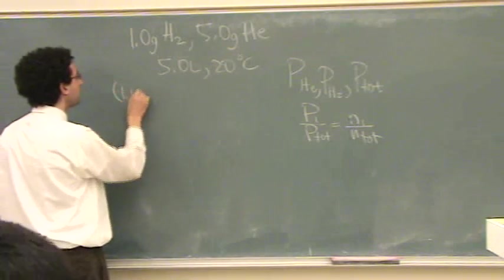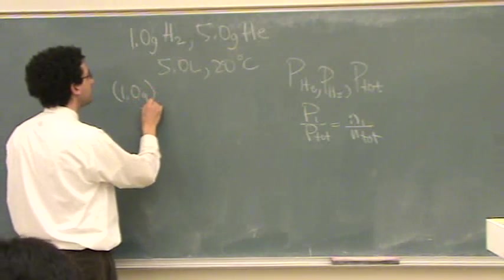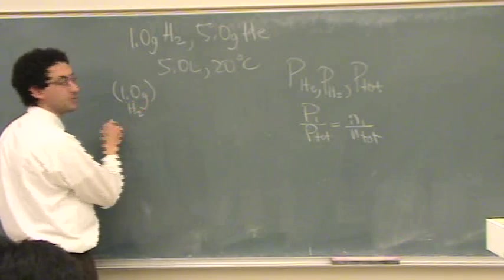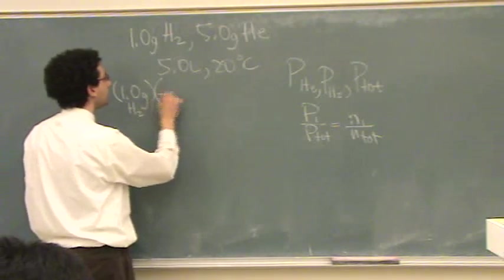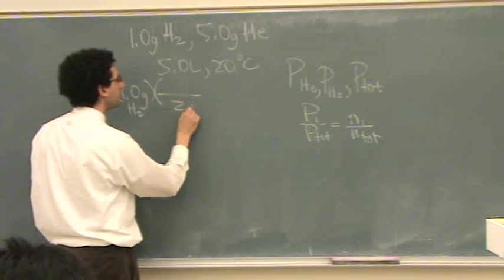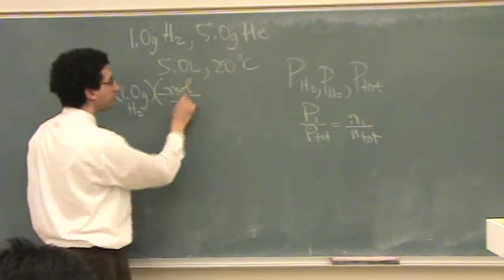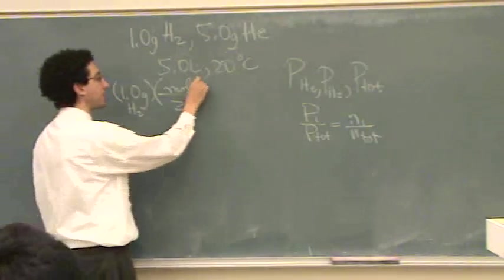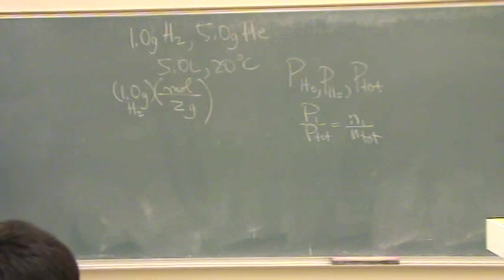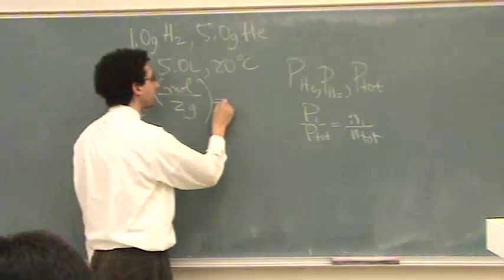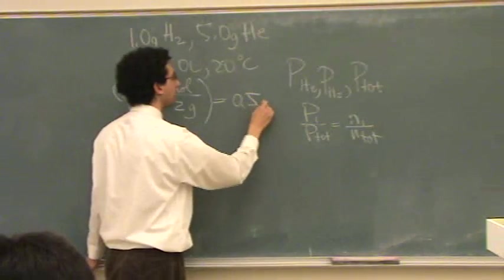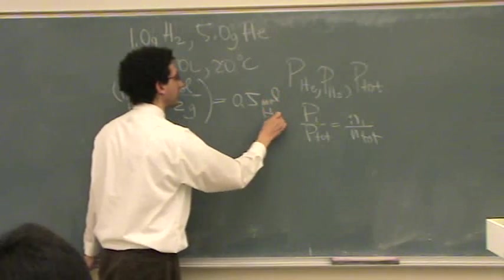So, we'll go to moles. You're going to go 1.0 grams, and this is of H2, times, it's about 2 grams per mole. You can do it more accurately, but from your periodic table, about 2 grams per mole. And so, this is going to be moles of H2, or about 0.5 moles of H2.